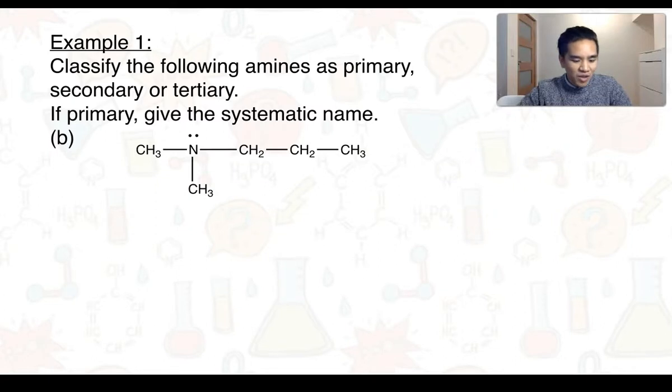For part B, we've got this particular amine here. We can see this nitrogen is bonded to 1, 2, 3 carbon atoms. So this tells us that it is a tertiary amine, and we don't need to know how to name for them.